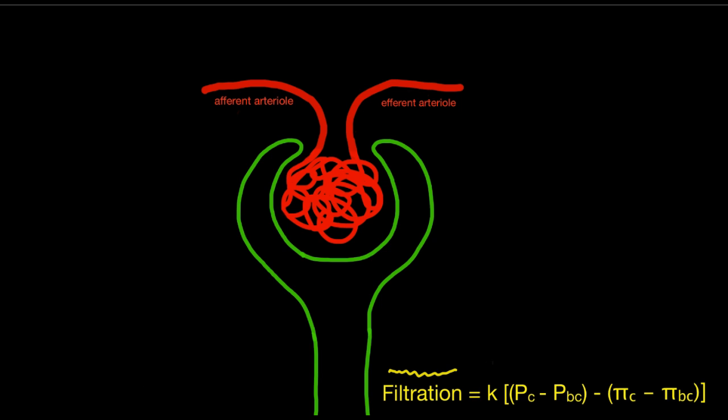The K term corresponds to the leakiness of the blood vessels — the leakiness of these capillary loops. Since the endothelium of glomerular capillaries is fenestrated, it has large windows and large holes, so it's quite leaky on purpose. This K term is higher than it is in peripheral capillaries. PC is the hydrostatic pressure in the capillaries, measured in millimeters of mercury.